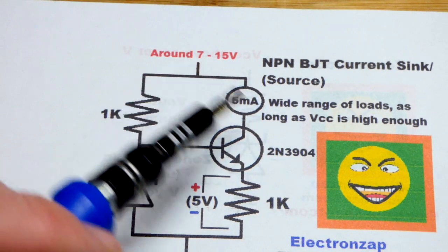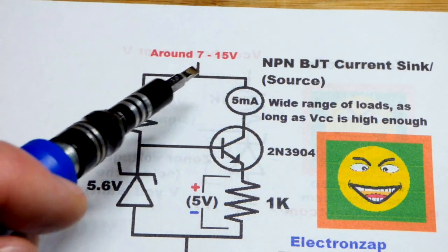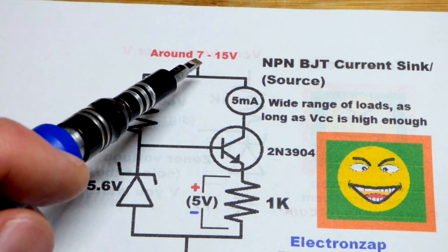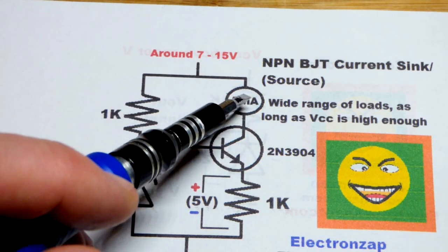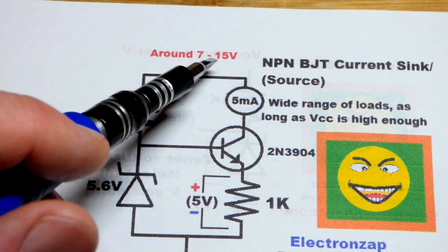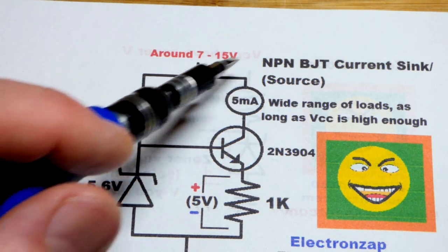And even as the load changes, we need enough supply voltage though for whatever load. When there's just the meter, which has practically no resistance, we should be fine with 7 volts. As we add LEDs or if we added resistance or whatever, we have to increase the voltage as needed.